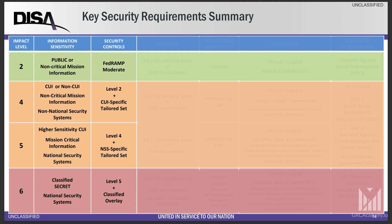Just know that agencies can establish additional requirements even if a system is already FedRAMP authorized. Also, the DOD's SRG has nothing to do with NIST 800-171 or CMMC. The SRG only applies to government systems, not corporate systems belonging to a contractor.